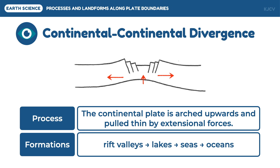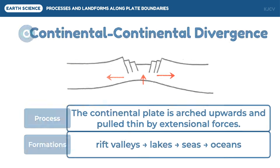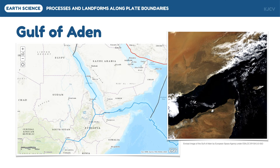An example of this boundary is the Gulf of Aden. The Gulf of Aden is already in the stage wherein the continental crust has broken apart. Particularly, these plates are the Arabian and African plates. This is the part of the East African Rift Valley where the African plate is in the process of splitting into two: the Somali plate and the Nubian plate.